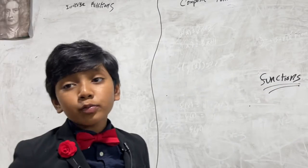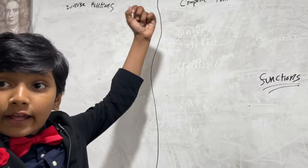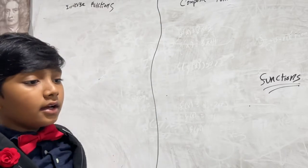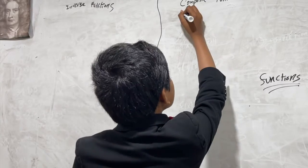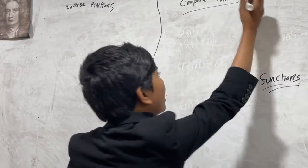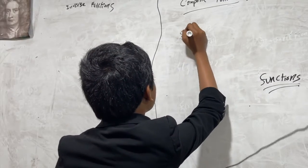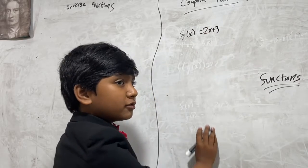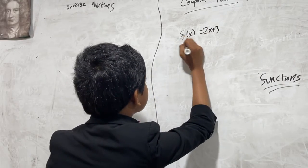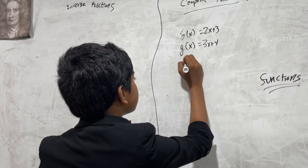Today we're going to be looking at two types of functions: composite and inverse functions. So first, what is a composite function? Let's say we have f(x) = 2x + 3, and g(x) = 3x + 4.